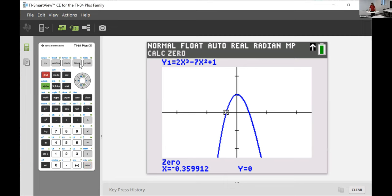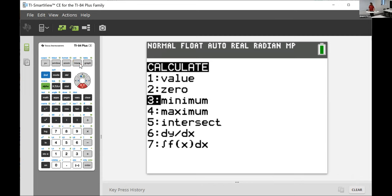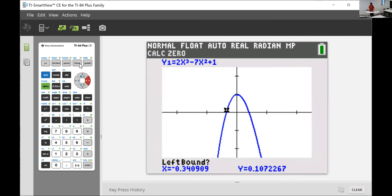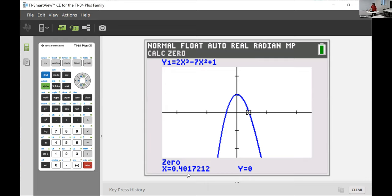Third root, same method. Go to the left of it. To the right of it. Then go near it. And here is our third root, 0.4017212. For that value of x, y is zero.